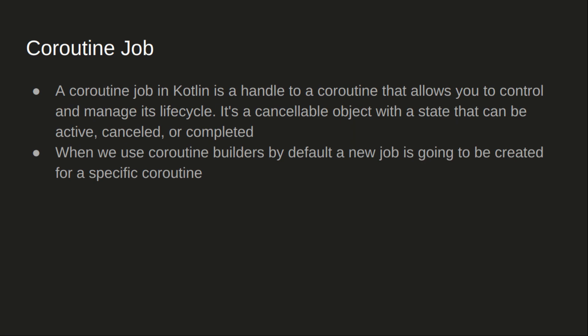When we use coroutine builders, by default a new job is going to be created for a specific coroutine. For example, if we use scope.launch, then there is going to be a specific job that is dispatched and we can use that to control the lifecycle.